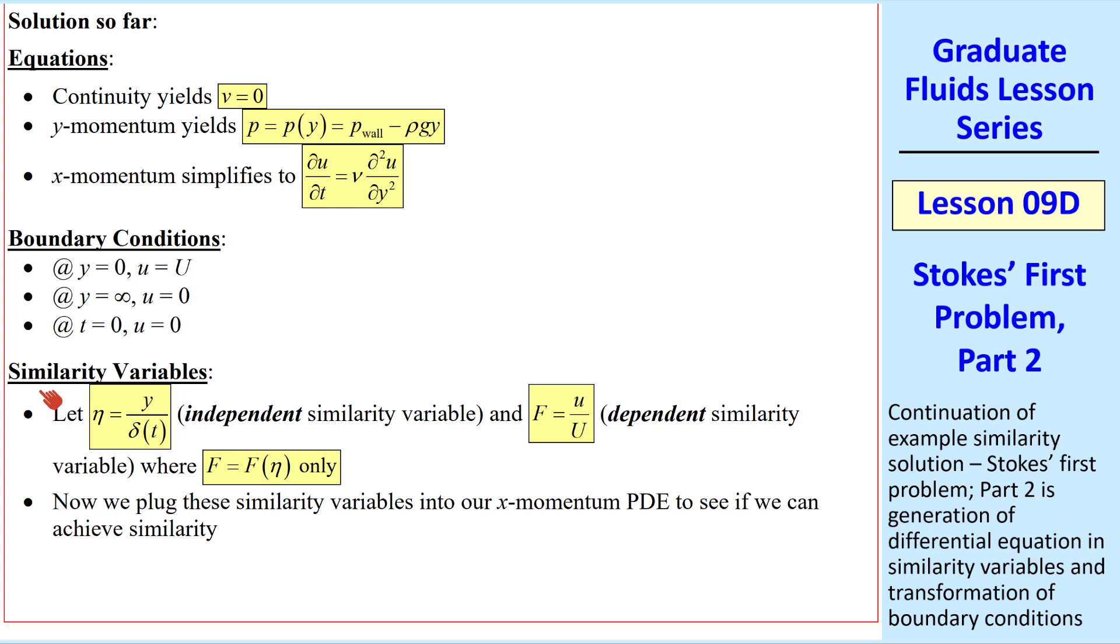In our previous lesson, we defined similarity variables. Eta is y over delta, where delta is a thickness of the profile, and capital F is little u over capital U.